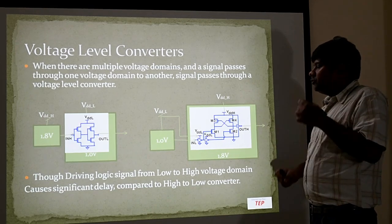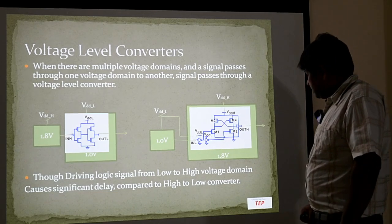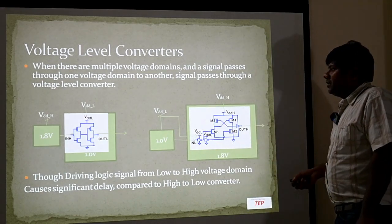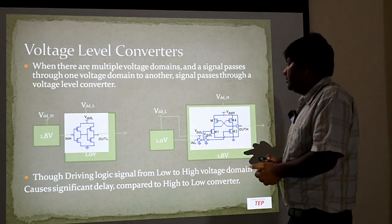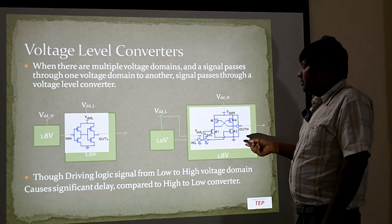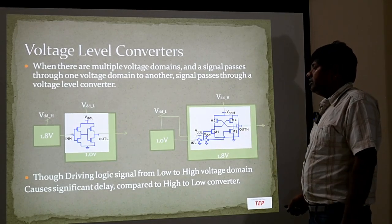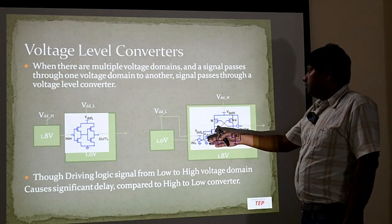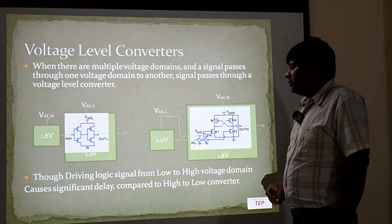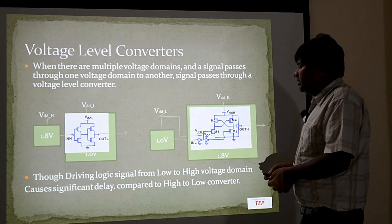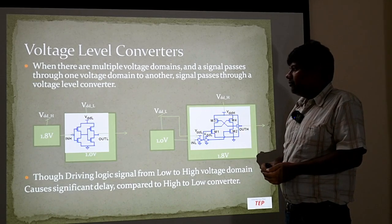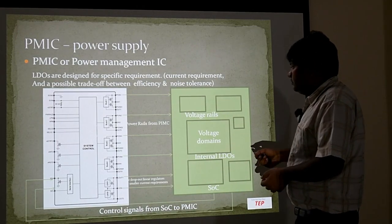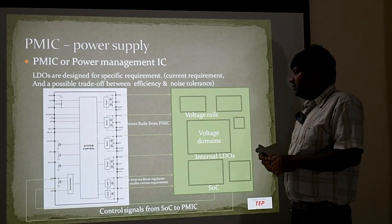When there are multiple voltage domains, there are things we need to take care of because signals pass from one domain to another. That is why level converters are required in this kind of architecture. There can be two types: going from VDD_high to VDD_low (high voltage to low voltage) and from low voltage to high voltage, which is slightly more complex. These voltage converters must be deployed when a signal passes from one power domain to another.